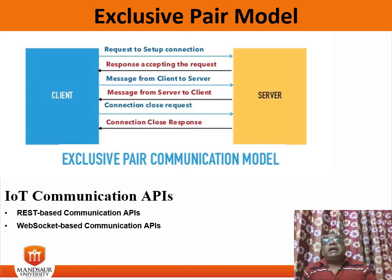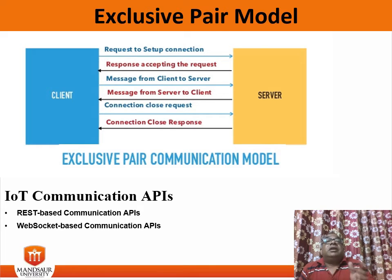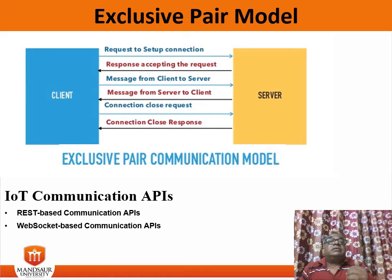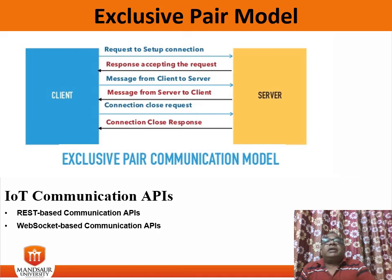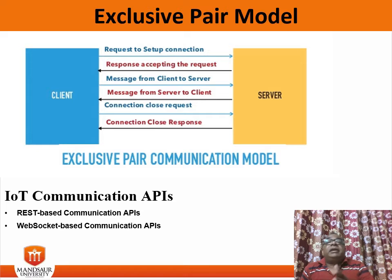The first constraint is client-server. The principle behind the client-server constraint is the separation of concerns. For example, the client should not be concerned with the storage of data, which is the concern of the server. Similarly, the server should not be concerned with the user interface, which is the concern of the client. This separation allows the client and server to be independently developed and updated.